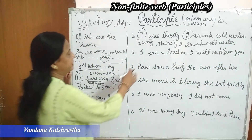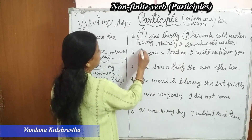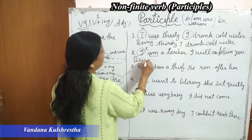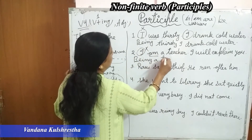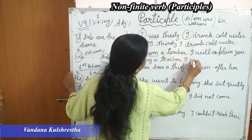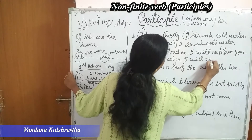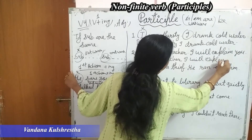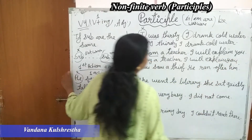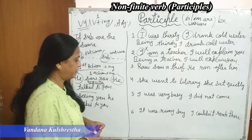Next: 'I am a teacher / I will explain you.' Again, subject is the same — we remove 'I'. 'Am' is a be-form, so it becomes 'being.' Result: 'Being a teacher, I will explain you.'